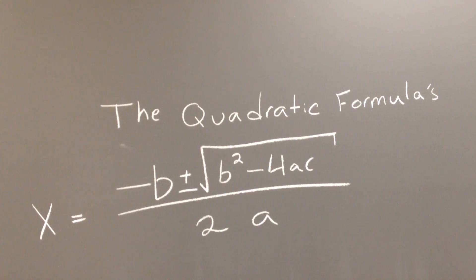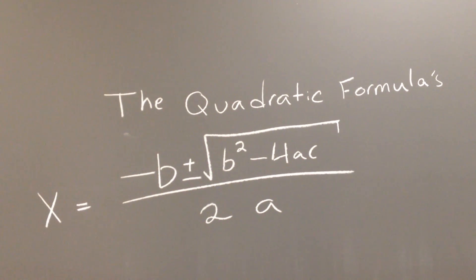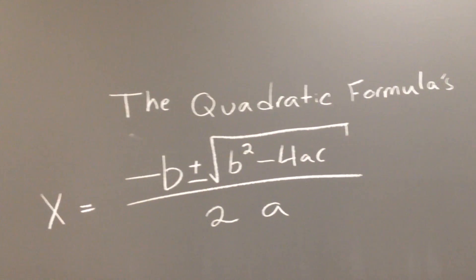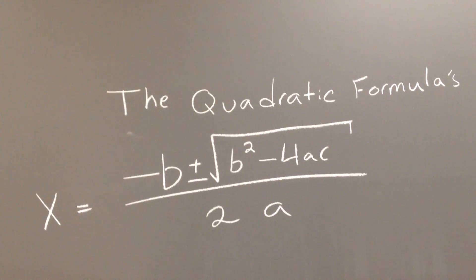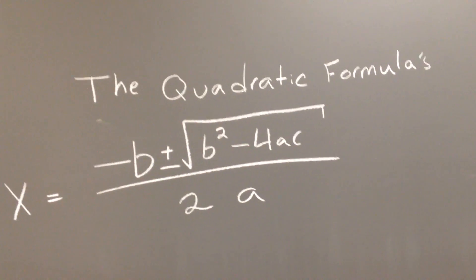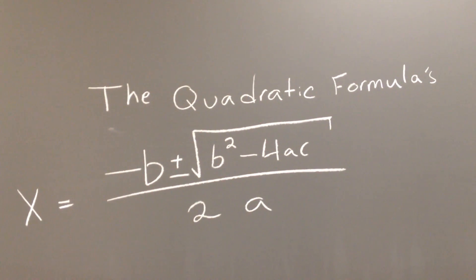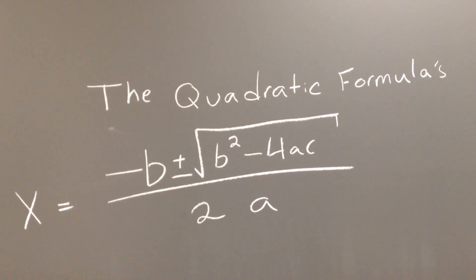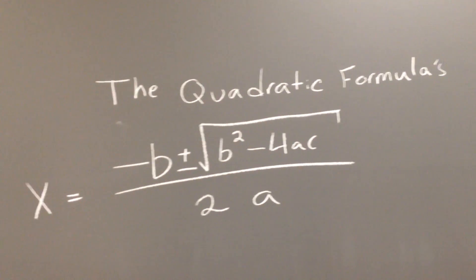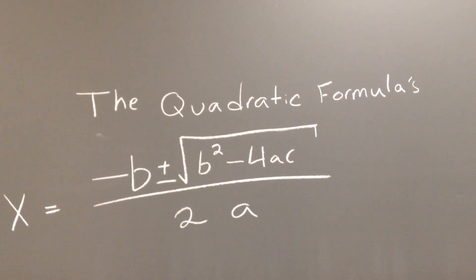Which is why we're making this video to give you guys a better way to memorize it. If you guys remember Pop Goes the Weasel from your childhood days, you can sing the quadratic formula to that song. You can also find other songs on YouTube that might be more interesting, like songs by Katy Perry or whatever. But I'm not as good a singer as Katy Perry, so I'm going to stick to Pop Goes the Weasel.